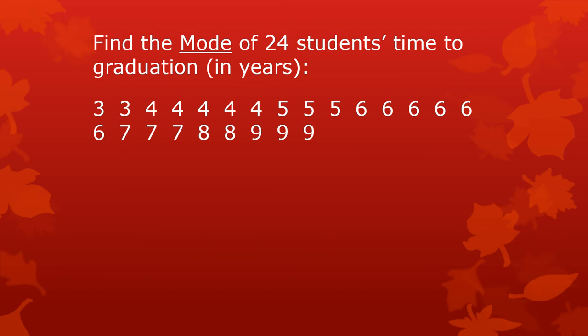Find the mode of 24 students' time to graduation in years. Let's break this down: you've got two threes, five fours, three fives, and six sixes. Six is the highest frequency, so six is the mode. The modal time to graduation is six years.